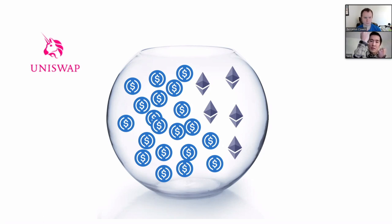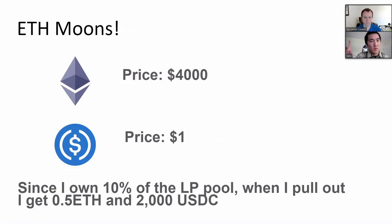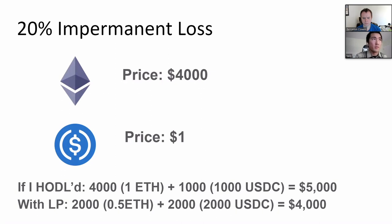Now that 10 ETH is worth more than 10,000 USDC. Since pools must maintain a 50/50 ratio, the pool rebalances — it sells some ETH and buys more USDC. So now there are 5 ETH and 20,000 USDC in the pool. When you pull out your 10%, you get 0.5 ETH and 2,000 USDC instead of 1 ETH and 1,000 USDC. If you'd just held those two assets you'd have $5,000, but from the pool you only get $4,000 — a 20% impermanent loss.